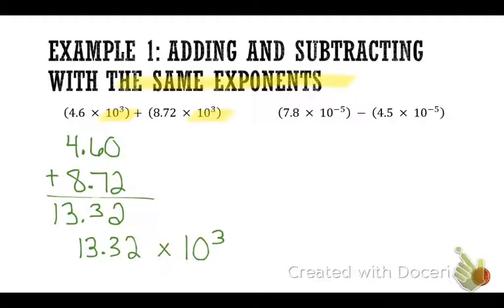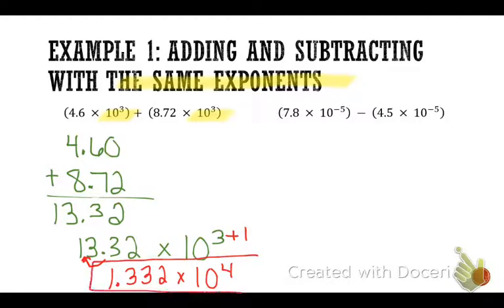This number is not in scientific notation. Can anybody tell me why? Because the number is bigger than 10. This number is bigger than 10, it's too big. Where does my decimal need to go to put this number in scientific notation? After the leading digit. If I need to move my decimal one more to the left, it increases my power by however many places I moved it. So I moved it one, I need to increase my power. It's like a pulley system. If I bump my decimal to the left, it increases my power by one. 1.332 times 10 to the fourth power.